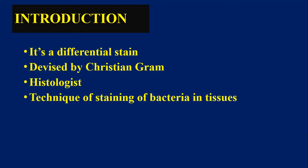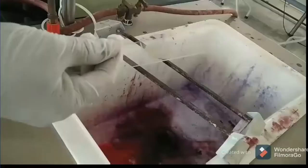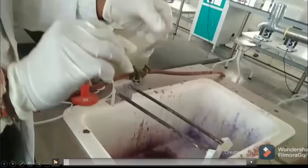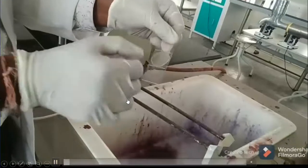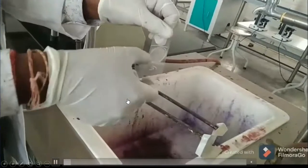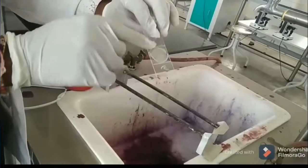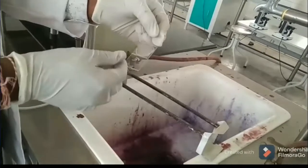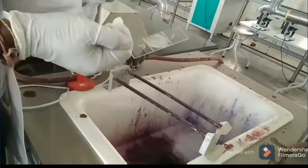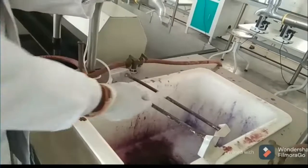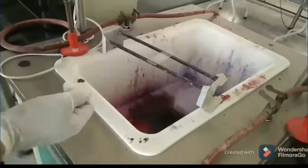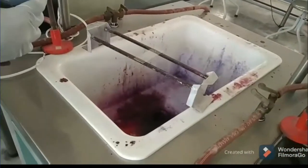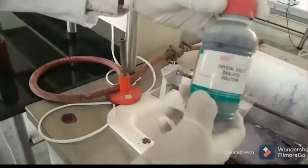The procedure for gram staining begins with a smeared slide. We take the smeared slide and mark it with a marking pencil. The marking should be on the opposite side from the smear.